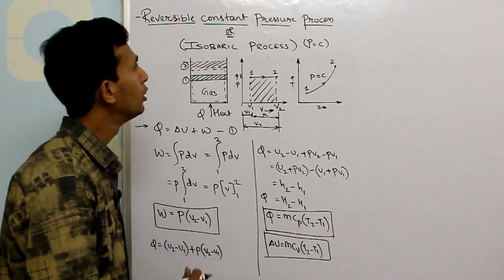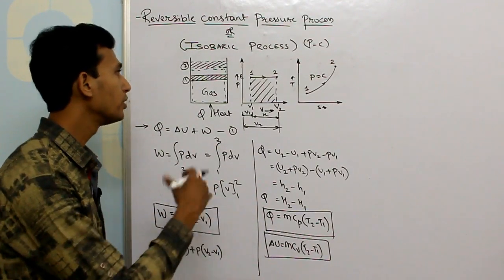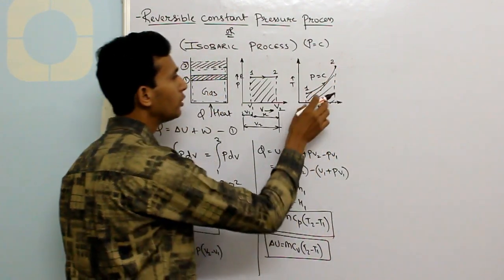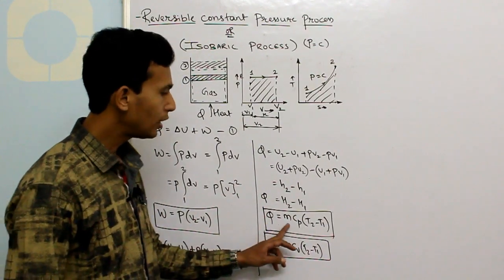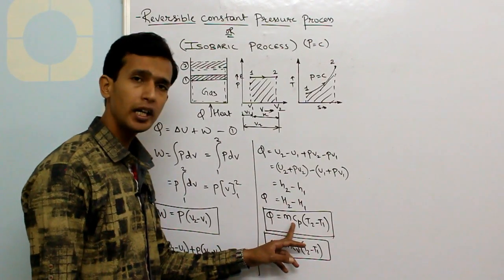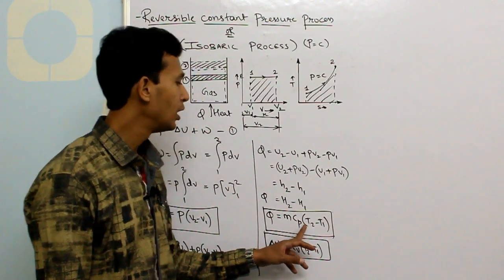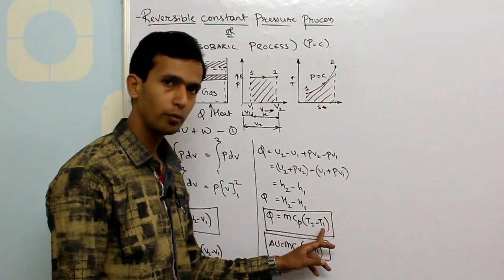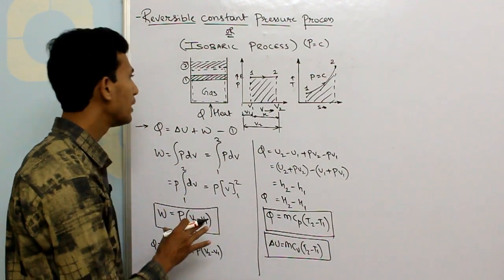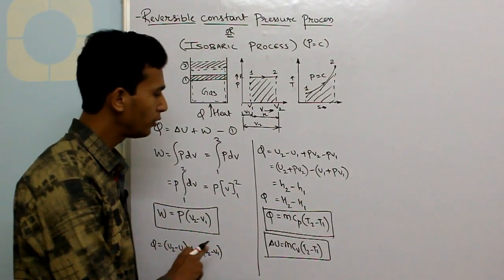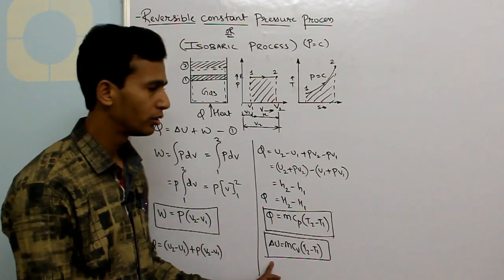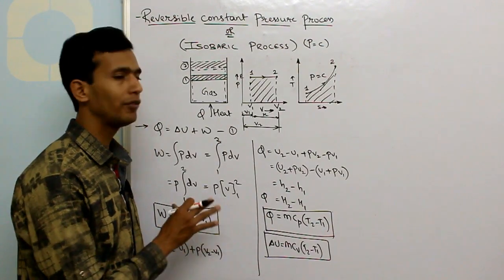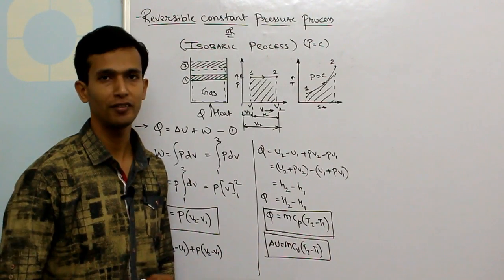So these are the three quantities — W, Q, and delta U — calculated for a constant pressure process. As discussed in the previous video, the area under the TS diagram is nothing but heat. The value of Q is non-zero because m is positive, Cp is always positive for any gas, and T2 is greater than T1, so the difference is also positive. We have non-zero values for W, Q, and delta U, which is why there is an area on both the PV and TS diagrams. Hope you have enjoyed this video — please like and subscribe to our channel. Thank you for watching.